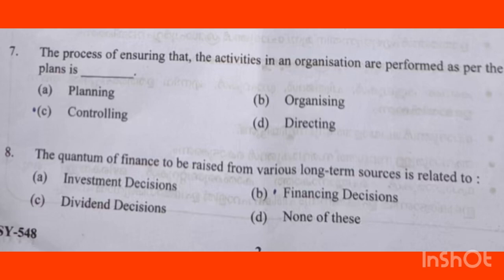The process of ensuring that the activities in an organization are performed as per the plan — options are planning, organizing, controlling, or directing. The right answer is Controlling. Option C is the correct answer. Controlling is the process of ensuring all activities are performed as per the plan.